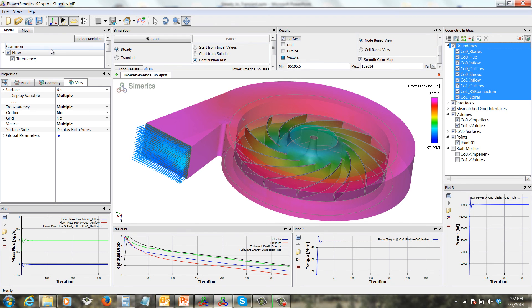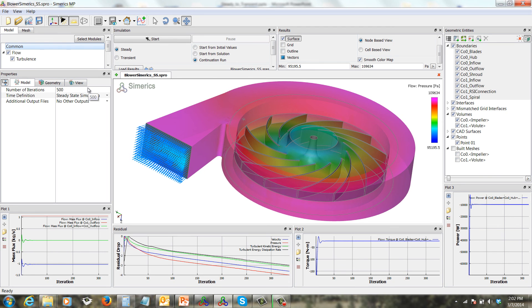First let's go to the common module and change the time definition to transient. Now let's specify the time step related parameters. The simulation time, or duration, as we calculated before, is going to be 0.1 seconds. The number of time steps will be 1600, and we're going to save every 50 time steps.